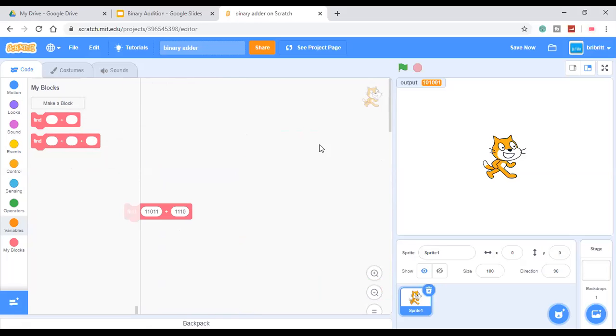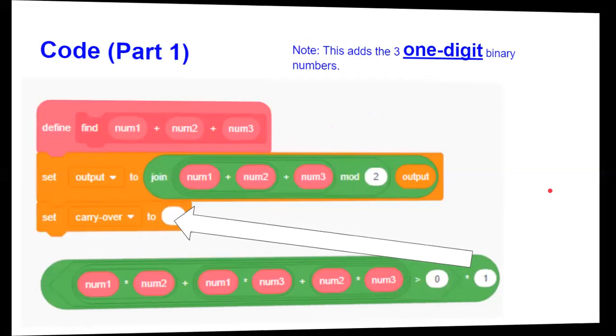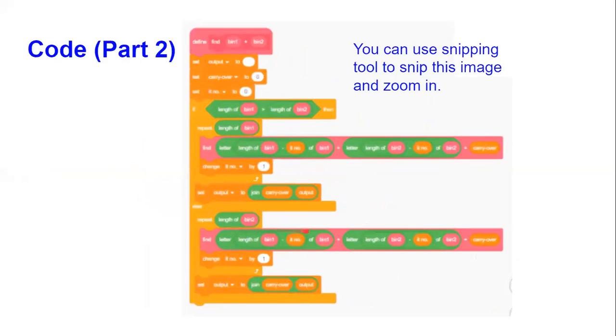We want to see the code again, a picture of the code. This is part 1 of the code: find num1 plus num2 plus num3. And for this one you'll have to use your snipping tool to snip it and zoom in.